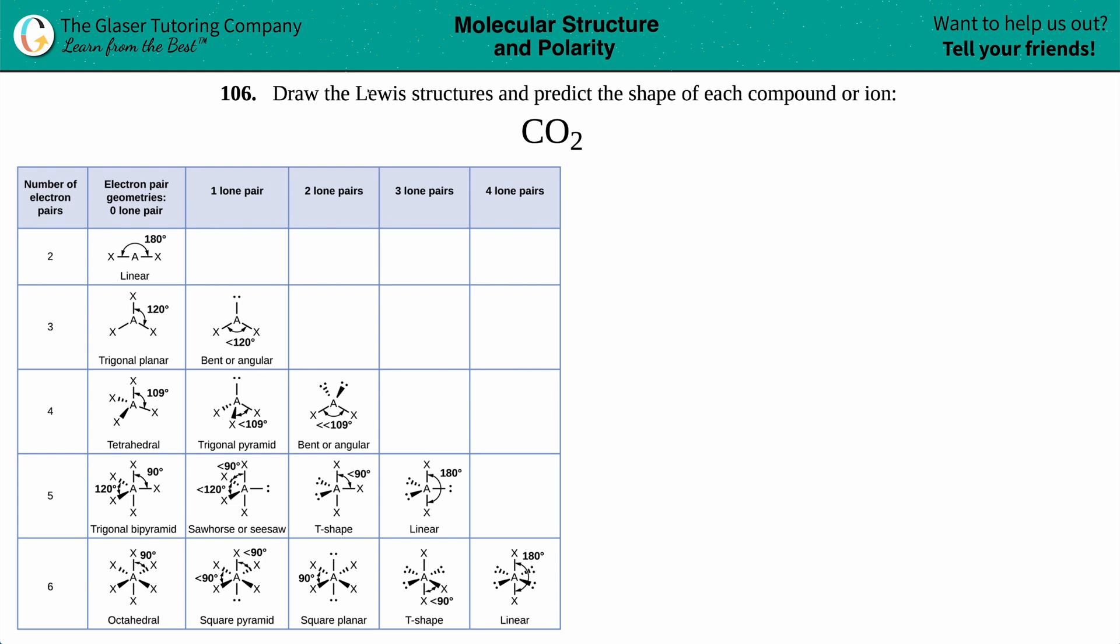Number 106: Draw the Lewis structures and predict the shape of each compound or ion. We have CO2. So we have to draw the Lewis structure and then predict the shape. When they're talking about shape, they're talking about either molecular structure or molecular geometry.